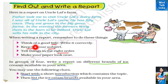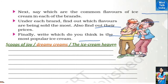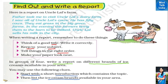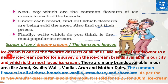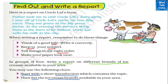You also have to write a report on different brands of ice cream available in your area. Your textbook gives some ideas. First, give a good title — like 'Scoops of Joy,' 'Dreamy Creams,' or 'The Ice Cream Heaven.' Second, start with a short introduction: 'Ice cream is one of the favorite desserts of all of us. Me and my friends went to a nearby ice cream parlor for a survey on ice cream brands available in my city and which is the most loved ice cream.'